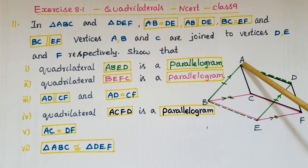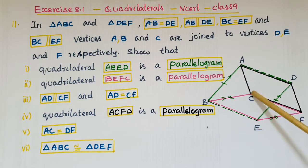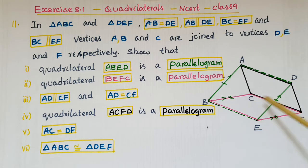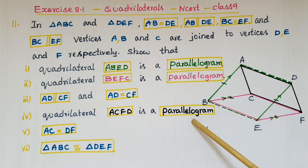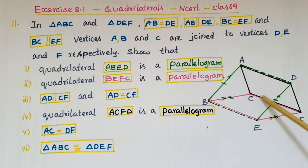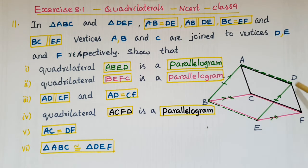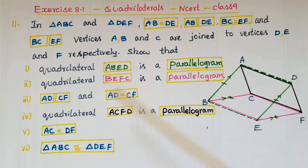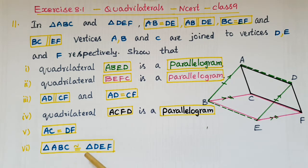We also have to prove that AD is parallel to CF and AD is equal to CF. Fourth, quadrilateral ACFD is a parallelogram. Fifth, AC is equal to DF. And sixth, triangle ABC is congruent to triangle DEF.